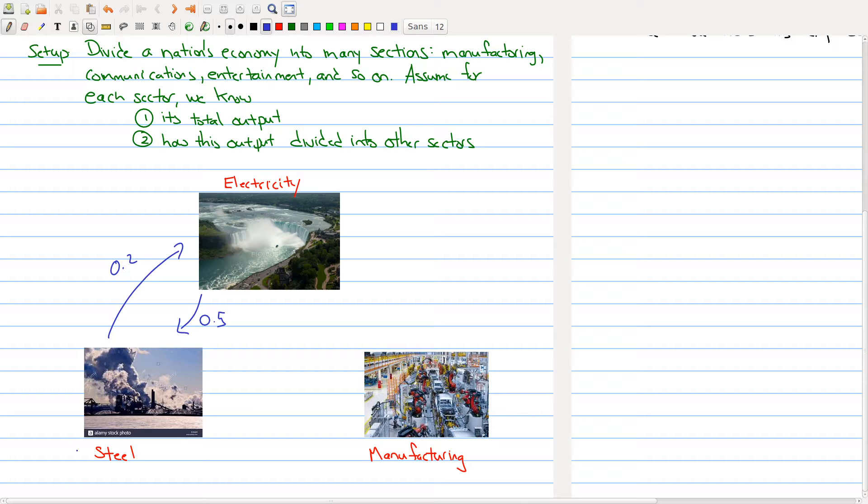On the other hand, steel may send 20% of its output back to itself. Steel may also send 60% of its output to manufacturing, which makes sense. You're taking your steel and making the cars from that. But manufacturing also will send back products that the steel industry will use. Manufacturing will then also create things for its own sector. Let's say 30% of its output goes back. And let's say electricity sends 40% of its output to manufacturing, and manufacturing sends 30% of its output back to electricity.